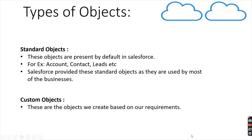So what are the different types of objects in Salesforce? There are two types: standard objects and custom objects. Standard objects are present in Salesforce by default. For example, we have Account, Contact, Leads, Opportunities, etc. Salesforce provides these standard objects as they are used by most businesses.